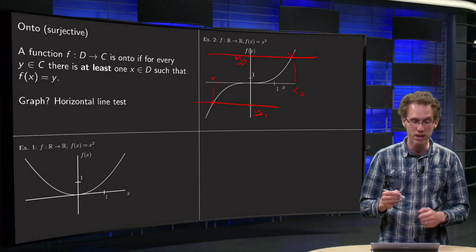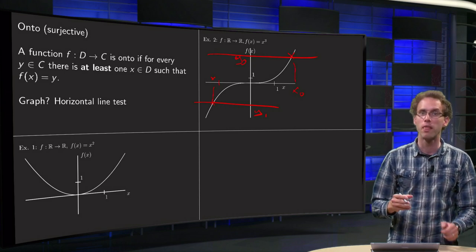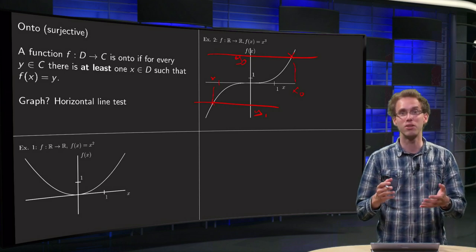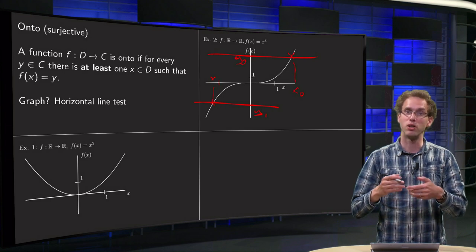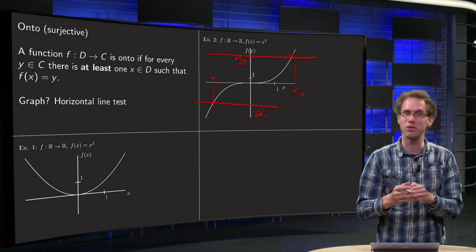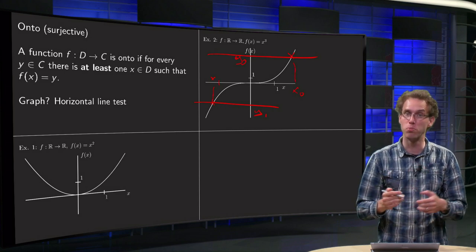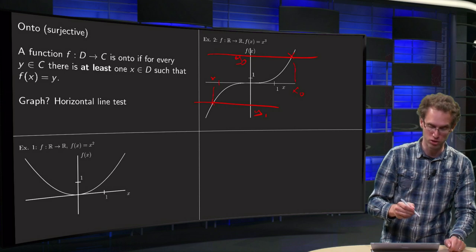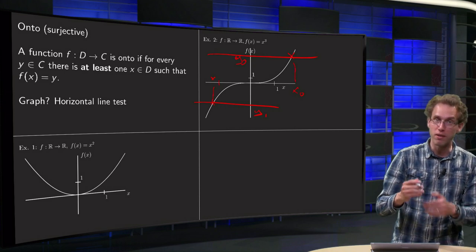Now you can always make a function surjective by restricting the codomain, because a function is onto if you can reach any point in the codomain. So if you restrict your codomain, make your codomain smaller, you can always make a function surjective.